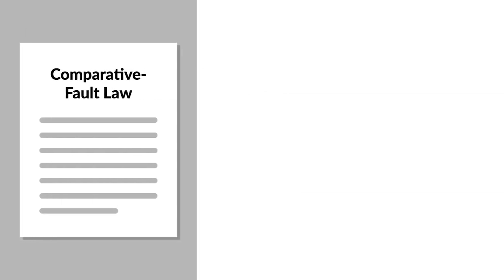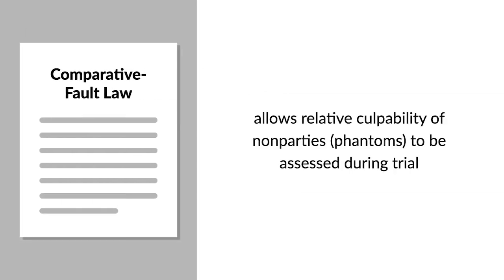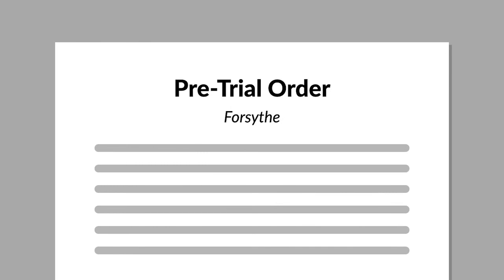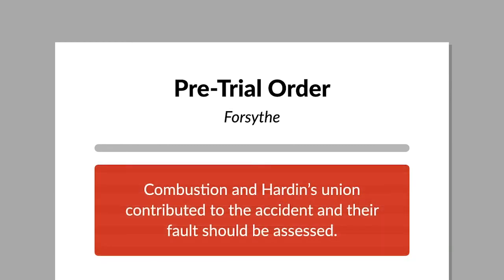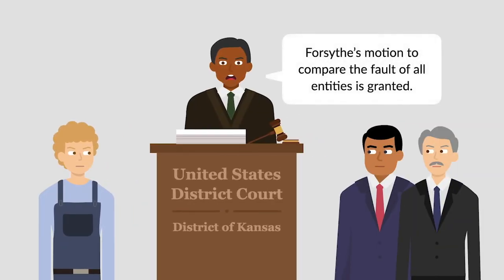Kansas' comparative fault law allowed the relative culpability of non-parties, called phantoms, to be assessed during trial. In the pretrial order, which states the parties' claims and defenses to be litigated at trial, Forsyth asserted that Combustion and Hardin's union had contributed to the accident and that their fault should also be assessed. Thereafter, the District Court granted Forsyth's motion to compare the fault of all entities that the evidence showed had contributed to the accident.